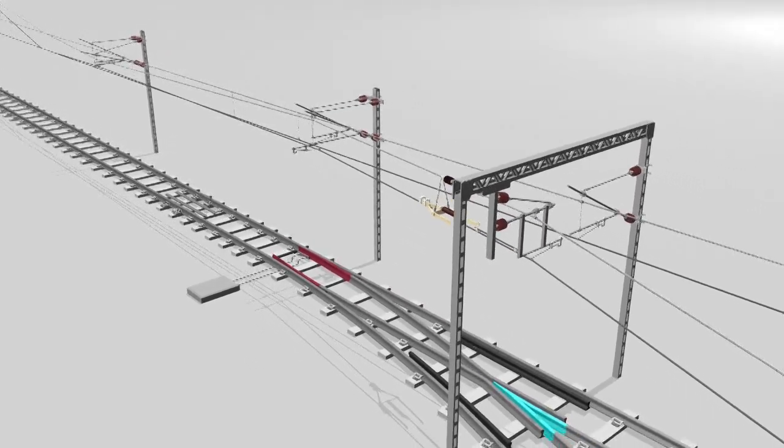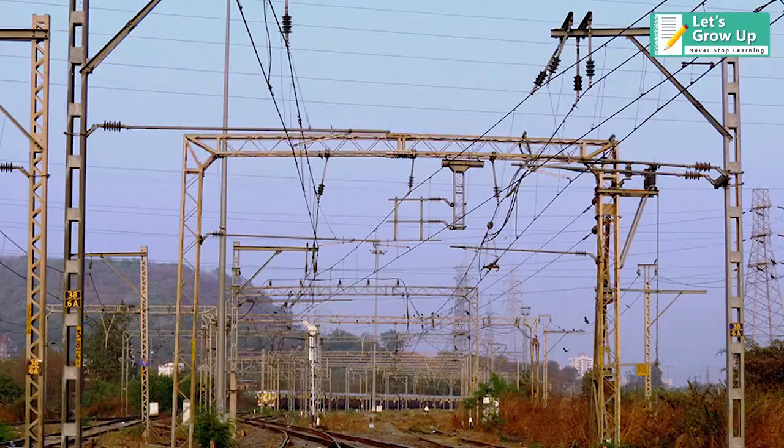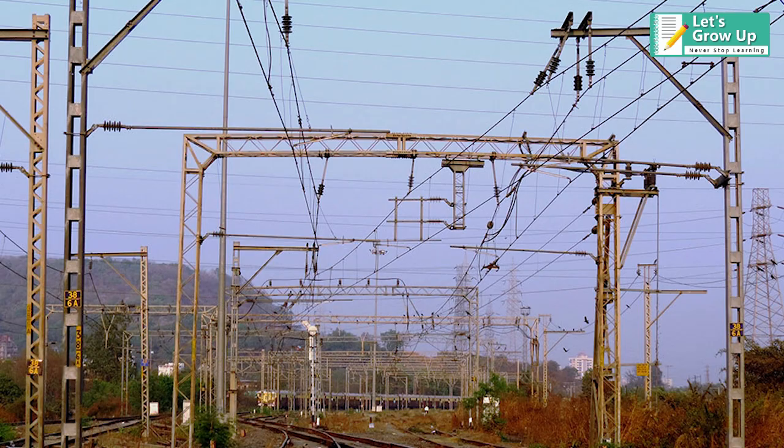It is used mainly on crossovers, diamond crossings, and turnouts for loops and sidings to isolate sections from the mainline.